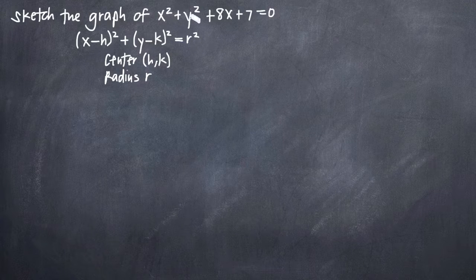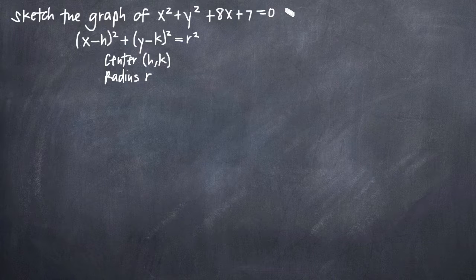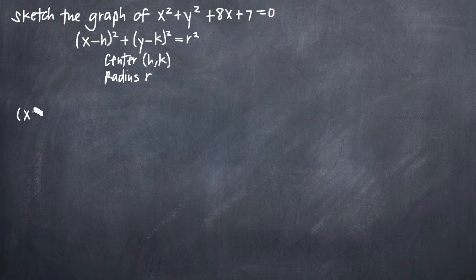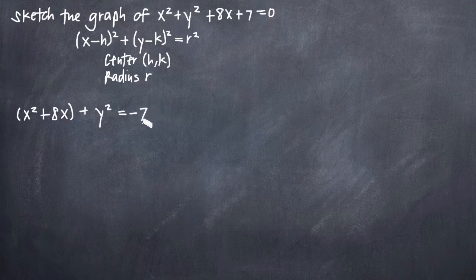The first thing we want to do to transform our equation into standard form is complete the square with respect to both x and y. While we do that, we'll move any constants to the right-hand side. So this value of 7 will be subtracted from both sides. We'll group our x terms together, getting x squared plus 8x, and group our y terms — we only have y squared — then move the 7 to get negative 7 on the right.